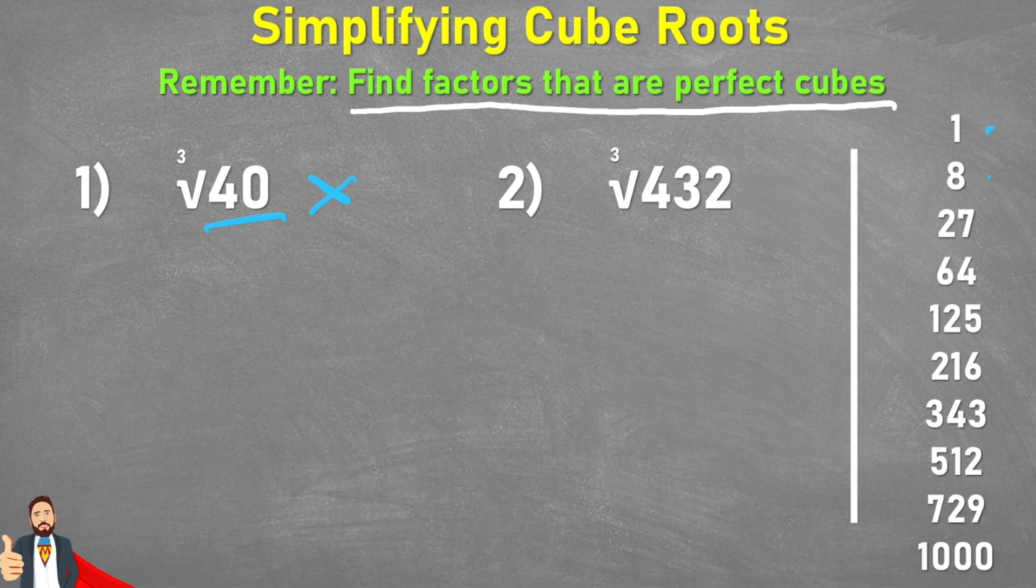So we have 1, 8, 27, 64, all the way down to 1000. They are the first 10 cube numbers, or perfect cubes. And we're going to see if any of these is a factor of 40. And I can see one straight away. We have the number 8. Because 8 times 5 is 40.